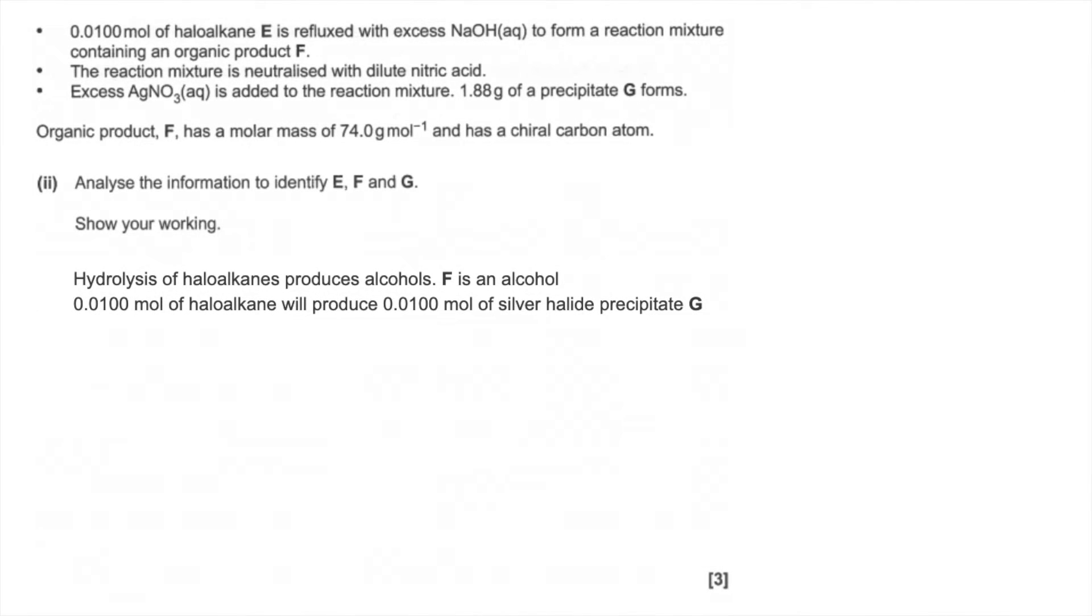So 0.0100 moles of haloalkane will produce 0.0100 moles of silver halide precipitate. Now, we actually know the mass of the precipitate, so we can work out its MR. So the MR of G, the silver halide precipitate, is mass over moles, so that's 188.